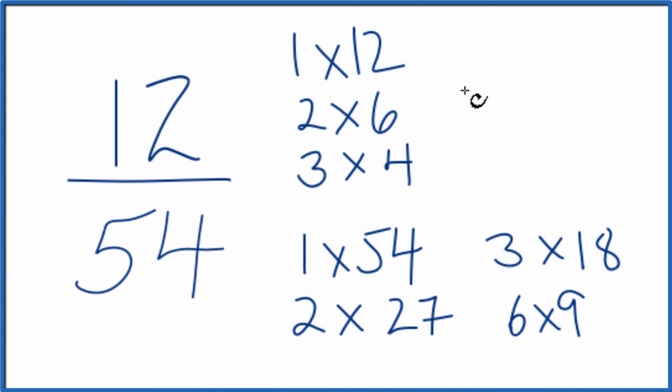So when I look at the factors for 12 and 54, I'm looking for the greatest common factor. So the greatest common factor for 12 and 54, it looks like 6 is the greatest common factor.